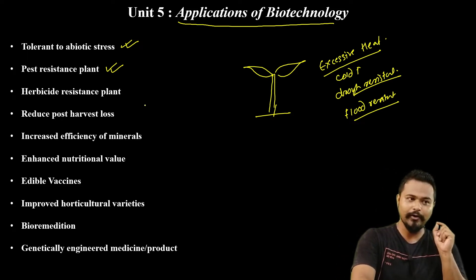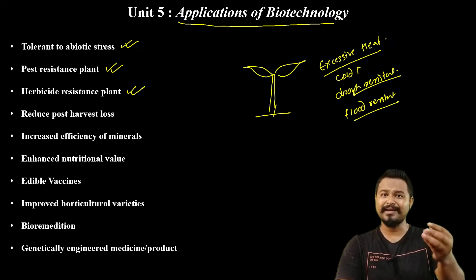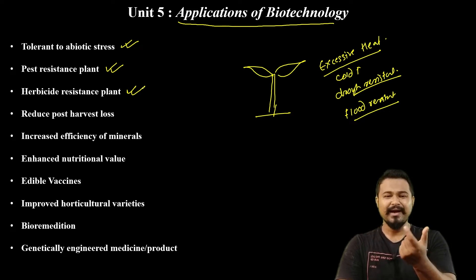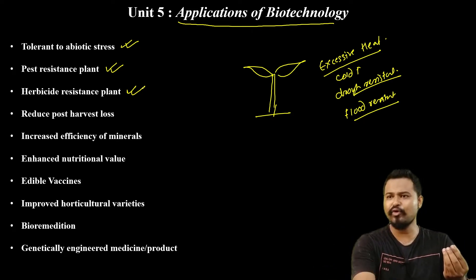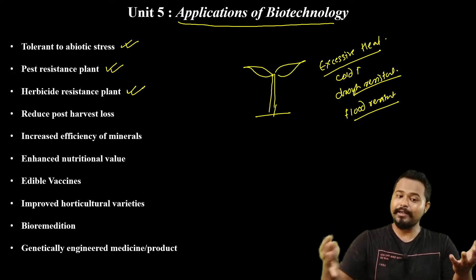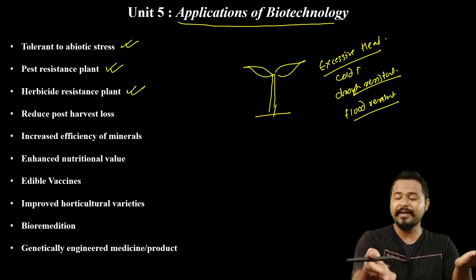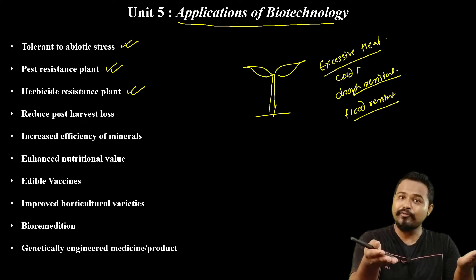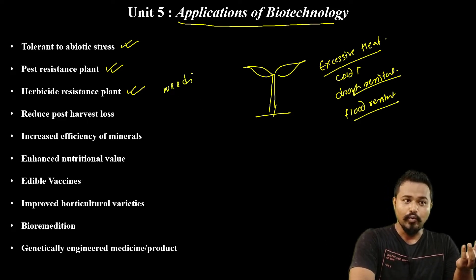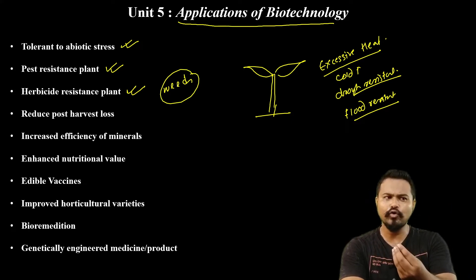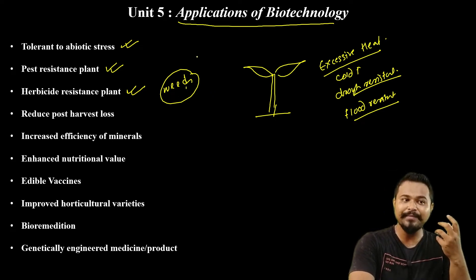Pest resistant plants are developed. Next, herbicide resistant plants — what is herbicide? Herbicide is used to control weeds. If you have fertilizers, nutrients, vitamins, and seeds, weeds will also grow along with your crop. With biotechnology, we can develop herbicide resistant plants which will not be harmed by herbicides used to kill weeds.